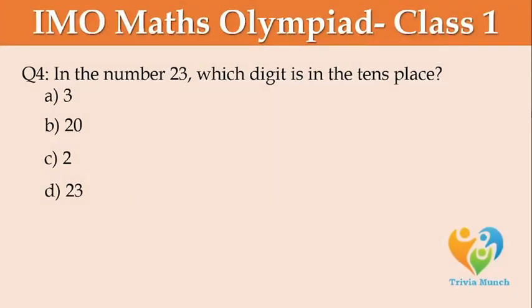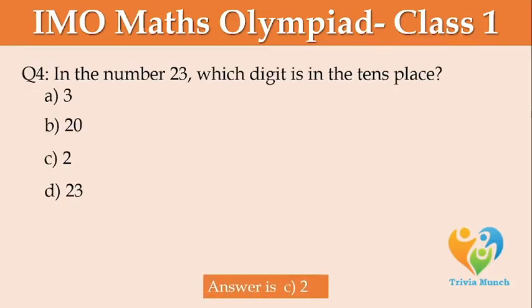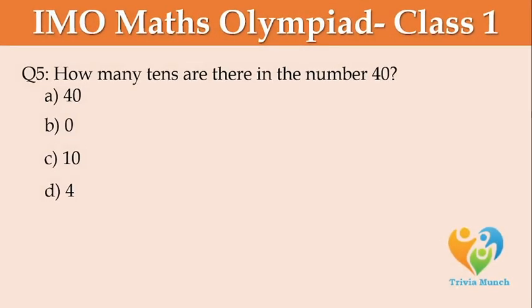In the number 23, which digit is in the tens place? Option A: 3, Option B: 20, Option C: 2, Option D: 23. How many tens are there in the number 40? Option A: 40, Option B: 0, Option C: 10, Option D: 4.